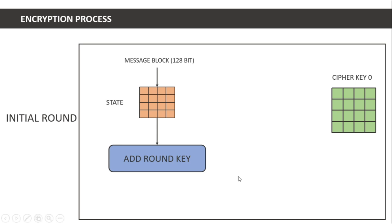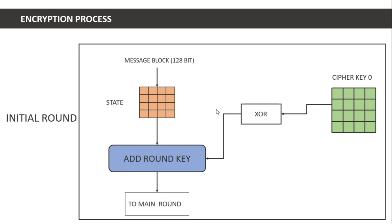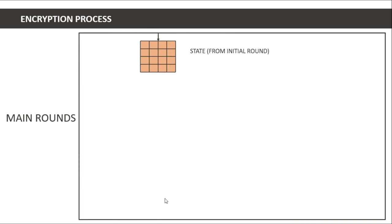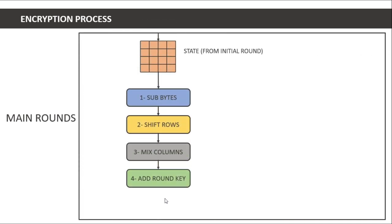We have round key zero and the message state. We simply XOR them element by element and get a new state. This passes into the main round. The main round takes the state from the initial round and applies four operations: sub byte, shift rows, mix columns, and add round key.